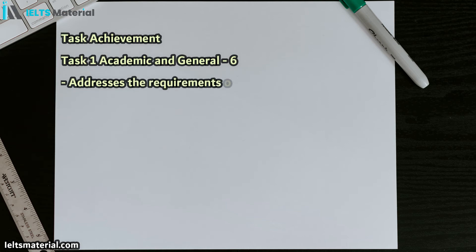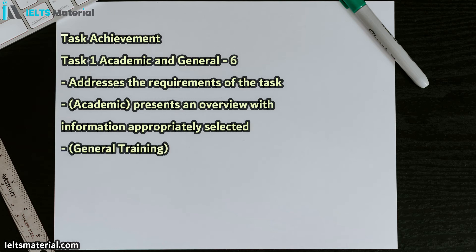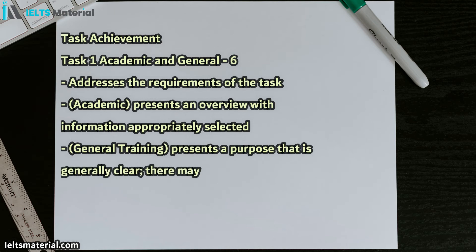Now, for Task Achievement for Task 1 Academic, in general, it's a bit different. So for both addresses the requirements of the task. That doesn't matter whether it's Academic or General. But now it's a little specific. For Academic, you present an overview with information appropriately selected. So you don't need an overview for the general writing, but you do for Academic, and it's very important.